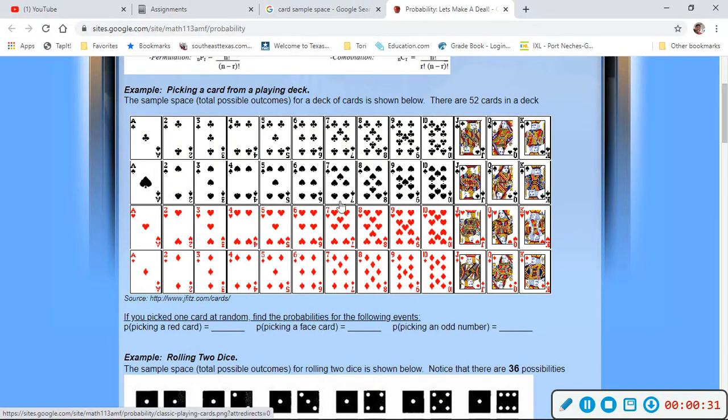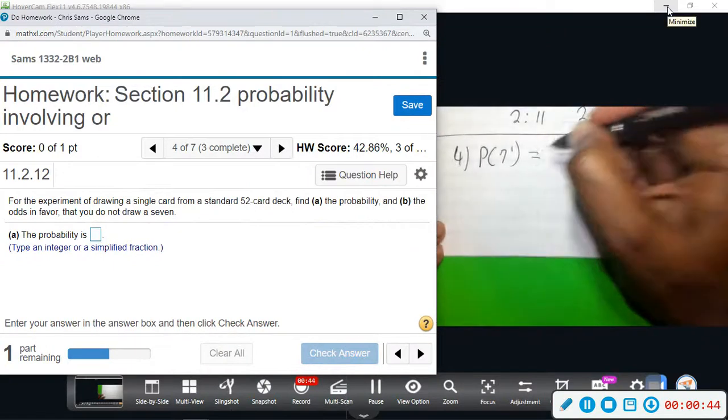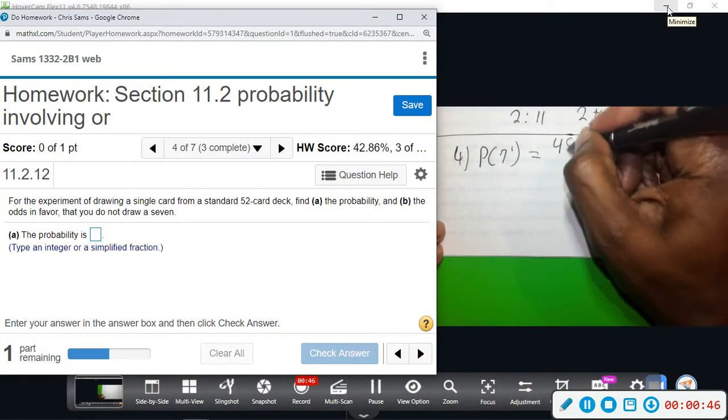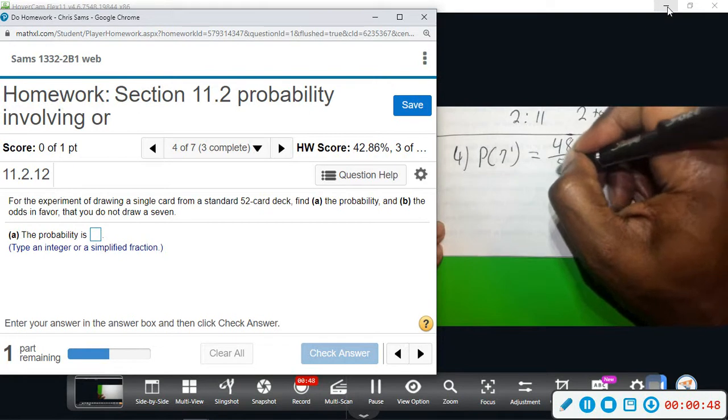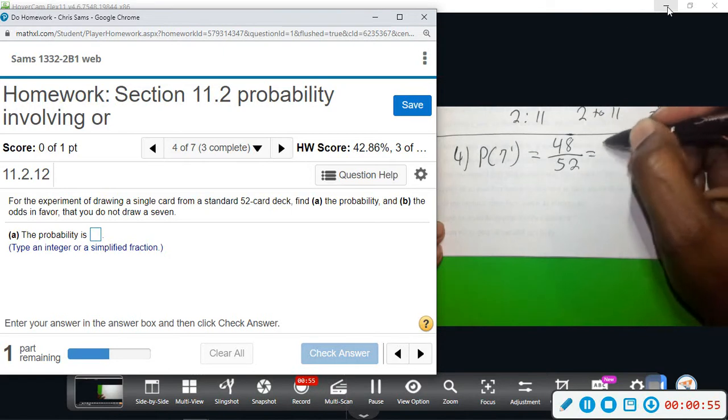If we take those four away, so out of 52 cards subtract four, there's 48 that are not sevens. So 48 out of 52 is my chance of not drawing a seven. And then we will divide by four, and that will give us 12 divided by 13.